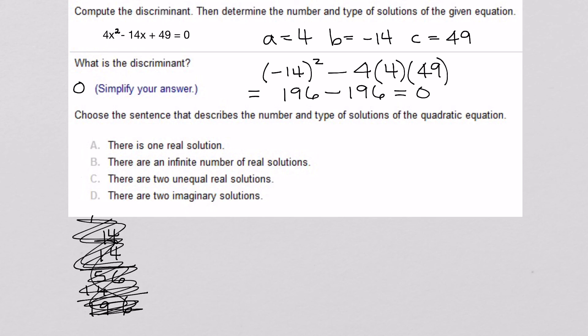All right, so my discriminant is 0. And that tells me there is one real solution. And if they said of multiplicity 2, I'd be even happier, but we're just going to go with one real solution. That's all they've got.